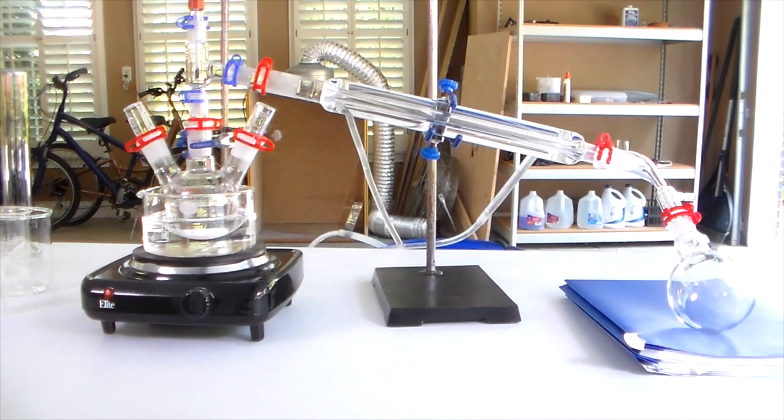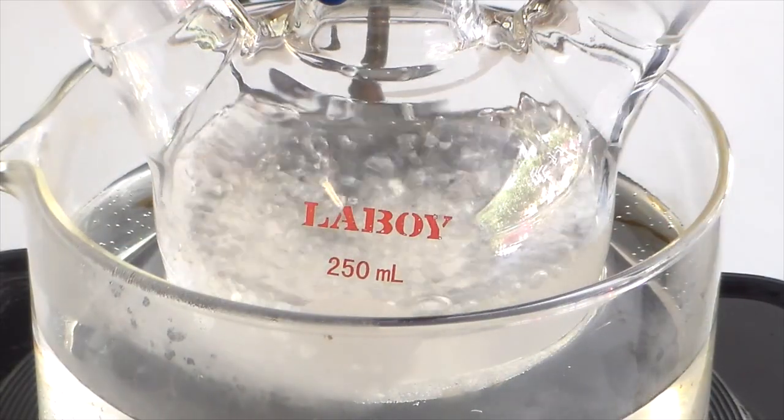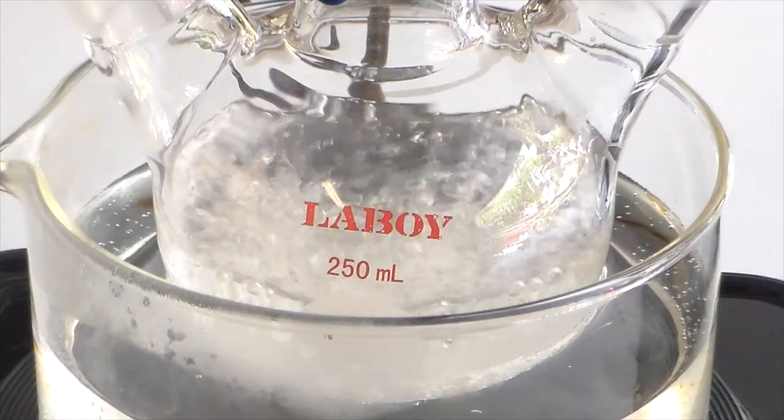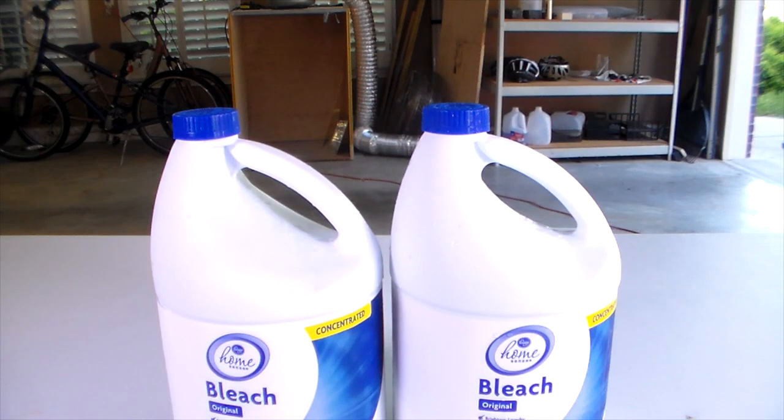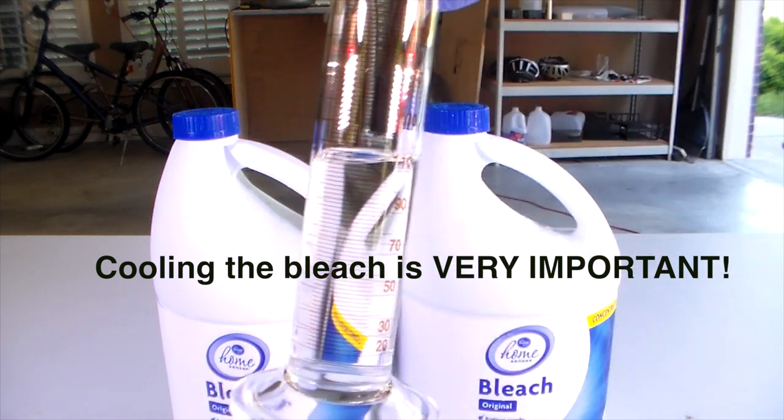If you have excess acetone, when you try to distill your product, the acetone will distill off with the chloroform in an azeotrope, making it very difficult to remove. Anyway, once the two bottles of bleach have been allowed to cool to below 0 degrees Celsius, the acetone can be added.